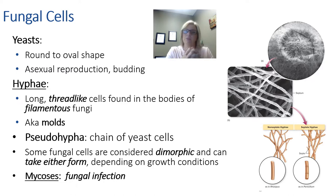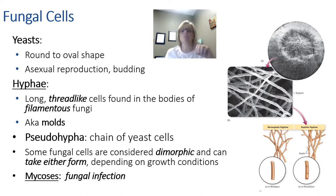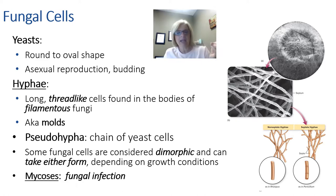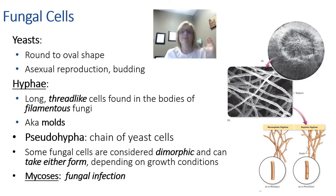Most fungi are going to be unicellular — that means one cell — though they may form colonies. There are a few more complex fungi that are going to be multicellular. Microscopic fungi exist in two basic forms: the yeast form and the hyphae form, which is also called filamentous. A yeast cell is distinguished by its round to oval shape and by the mode of asexual reproduction. It grows buds that are genetically identical and bud off to become separate cells. Hyphae are more thread-like and grow on filamentous fungi — more your molds. Some forms produce pseudohyphae, which is a chain of yeast cells that kind of looks like hyphae but stay together.